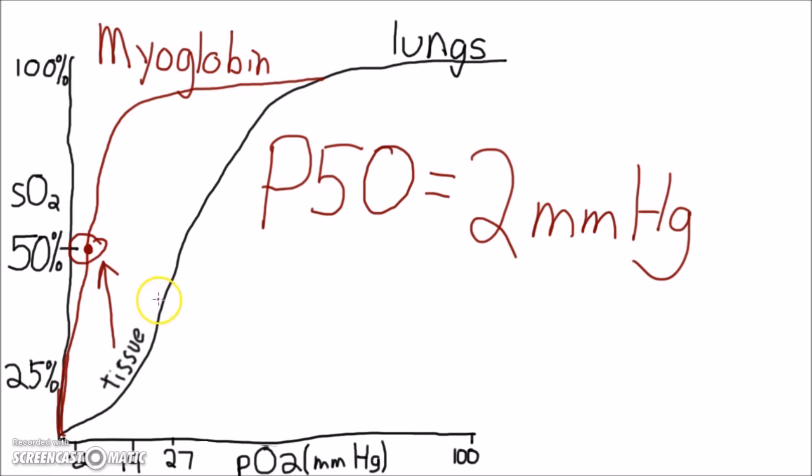Myoglobin's P50 is very low, so it will hold onto the oxygen until the muscle really needs it. High concentrations of myoglobin in muscle cells allow animals to hold their breath underwater for a longer period of time.